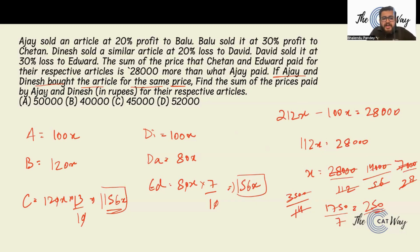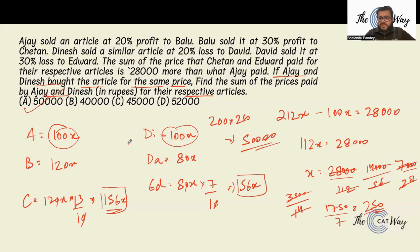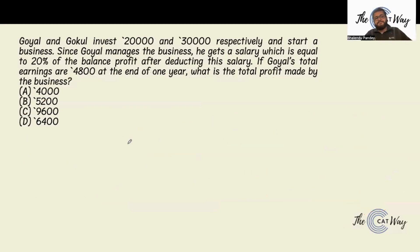To find the sum of prices paid by Ajay and Dinesh for their respective articles: Ajay and Dinesh together paid 100x plus 100x, which is 200x. So 200 multiplied by 250 gives 50,000 rupees. In total, Ajay and Dinesh together paid 50,000 rupees to get their articles. That's the correct answer.